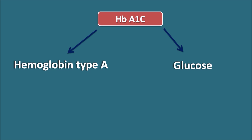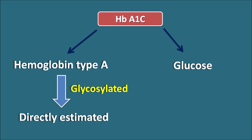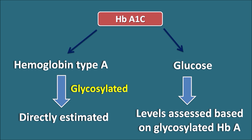Hemoglobin type A is estimated as glycosylated hemoglobin type A. This can be estimated directly within the blood, and glucose can be estimated by whatever the number of the glycosylated hemoglobin type A present in the blood. In this way, glucose levels can be assessed based on the glycosylated HbA levels in the blood.